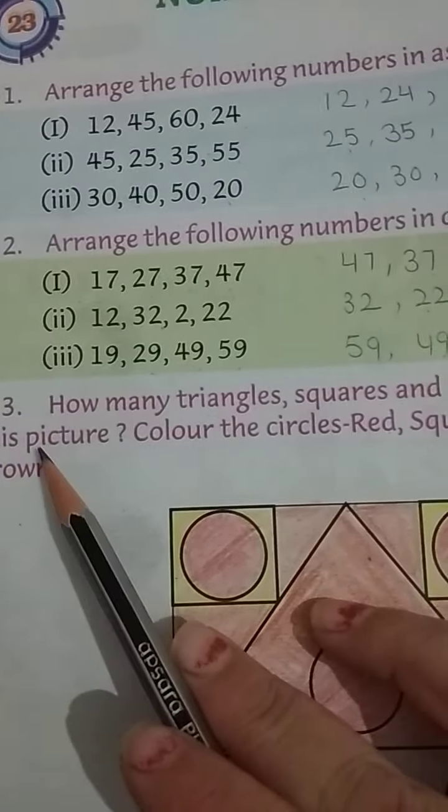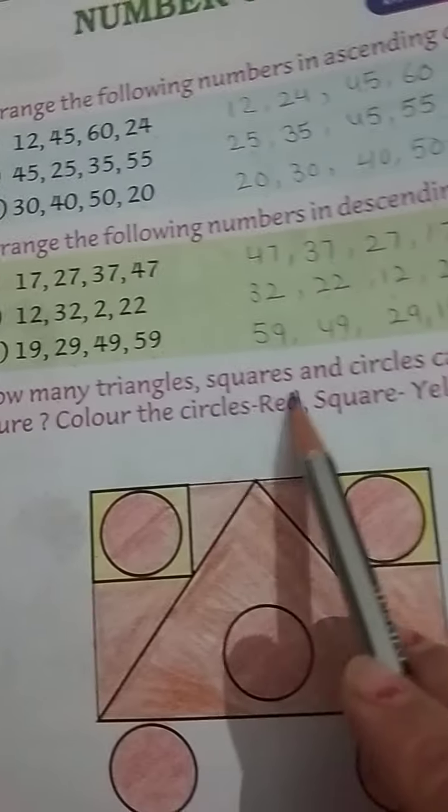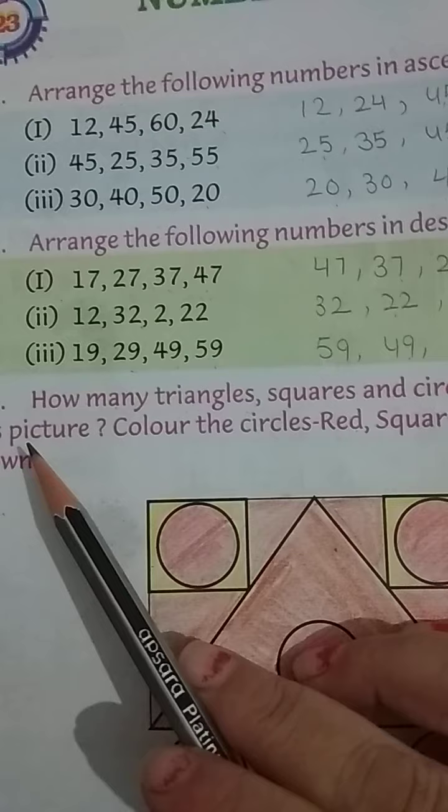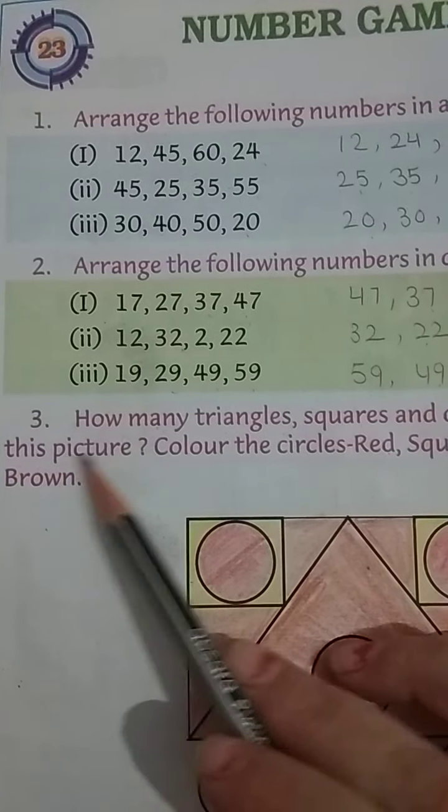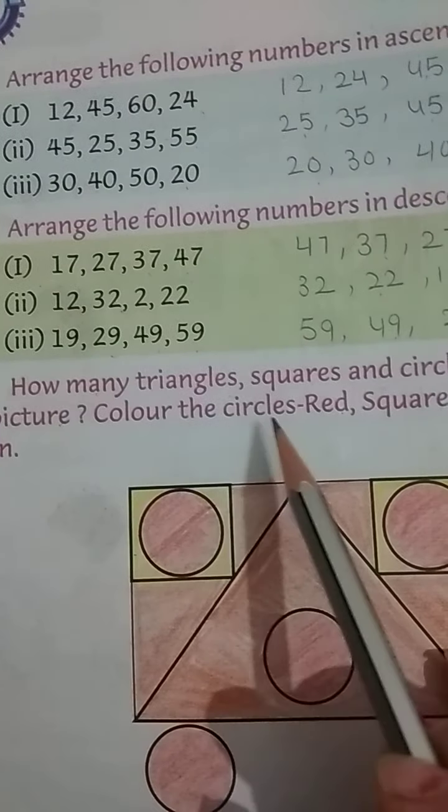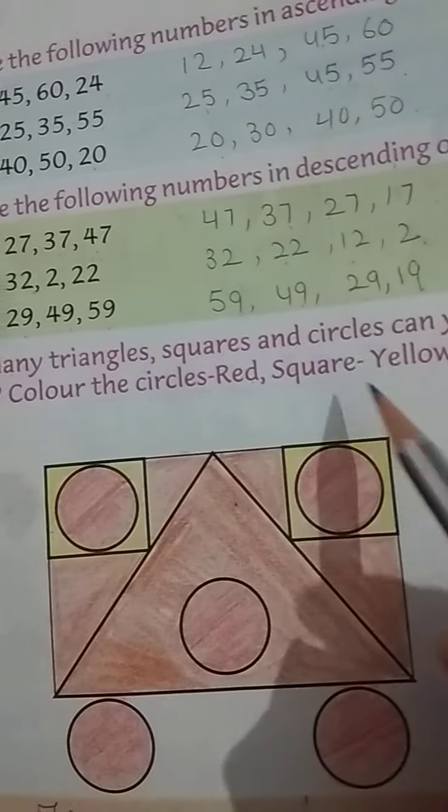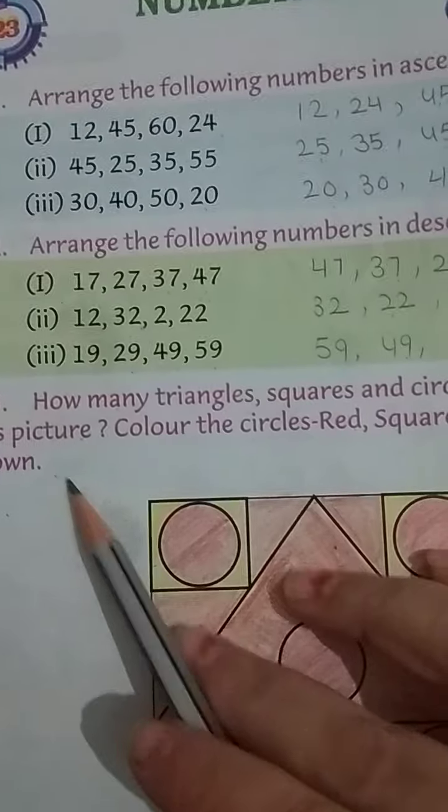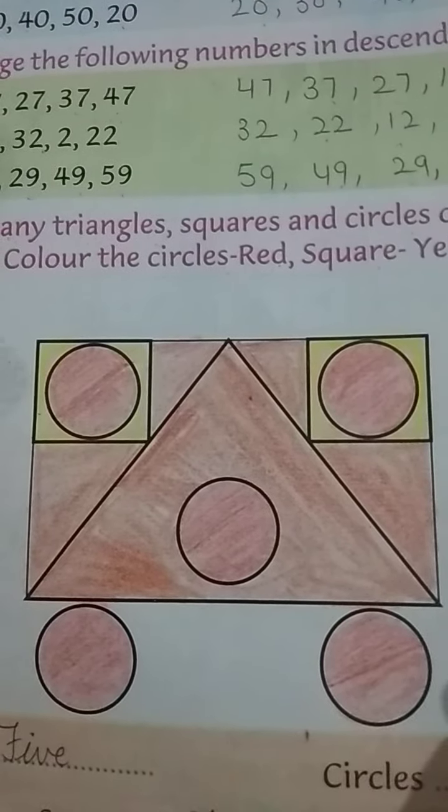Number third. How many triangle, squares and circles can you find in this picture? Color the circle red, square yellow and triangle brown. Maynay already yaan pe colors kar rakhye hain aur aapne bhi karna hai.